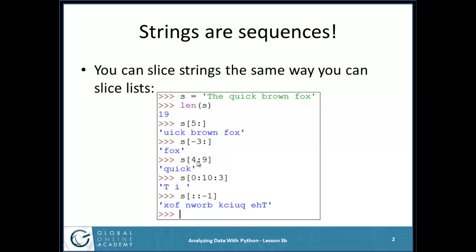If I go from 4 to 9, it says start at position 4. Go up to, but not including, 9. 0, 1, 2, 3. Here's 4, 5, 6, 7, 8. Up to, but not including the space after Quick. I just get the word Quick.